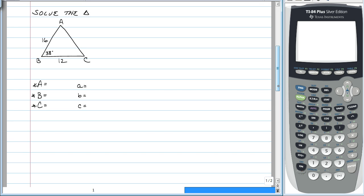So we're going to solve the triangle. So we already know that angle B is 38 degrees. And we know that little c is 16. And we know that little a is 12. So what we're going to do is we are going to use the law of cosines to find little b, big A, and big C.